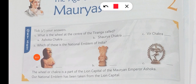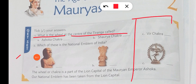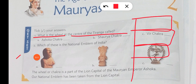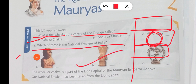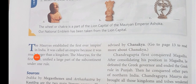First we will do the 'get it' section. What is the wheel at the center of our Tiranga, or Tri-Color national flag? In between we have the Ashok Chakra. Which of these is the national emblem of India? This is our national emblem of India.